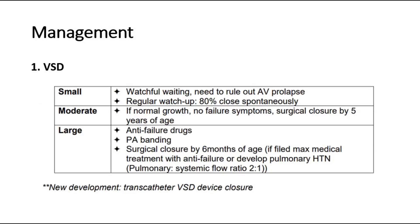Management will depend on your provisional diagnosis. For ventricular septal defect, which is quite commonly seen in exams, management depends on the size of the VSD. If small, we can do watchful waiting because most close spontaneously — about 80% of cases. For moderate VSD with no affected growth or heart failure symptoms, we can consider surgical closure by 5 years old. If it is a large VSD, management includes giving anti-failure drugs, pulmonary artery banding, and surgical closure by 6 months old.